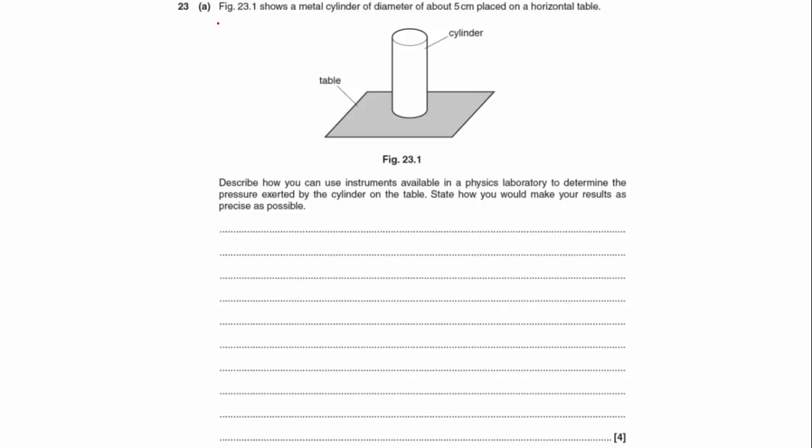Right, number 23. Figure 23.1 shows a metal cylinder of diameter about 5 centimeters placed on a horizontal table. Describe how you can use instruments available in the physics laboratory to determine the pressure exerted by the cylinder on the table. State how you would make your results as precise as possible.